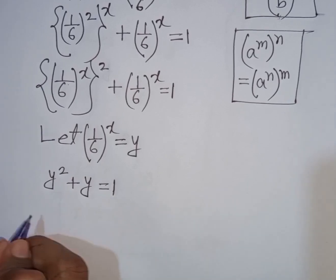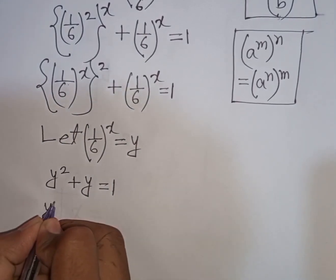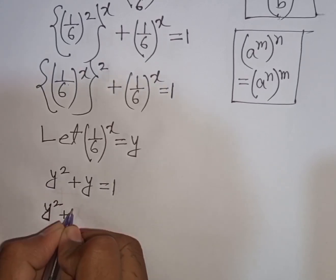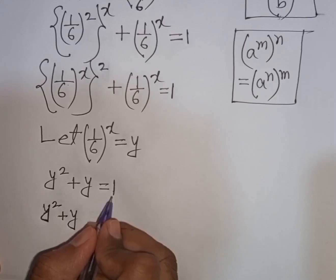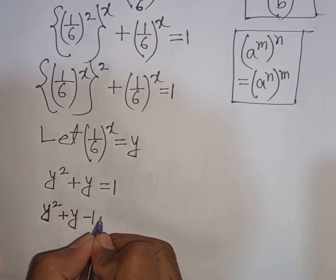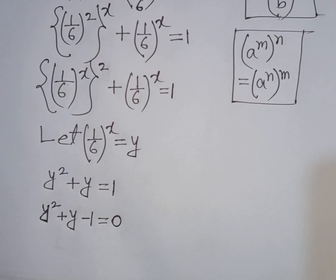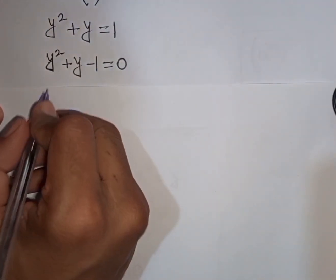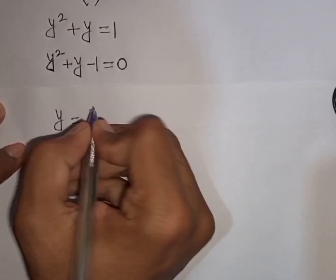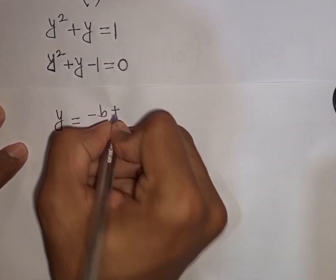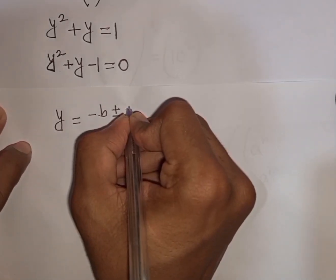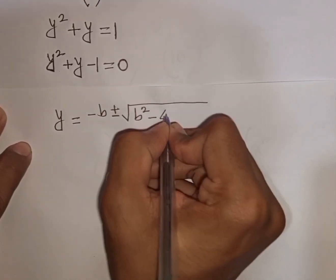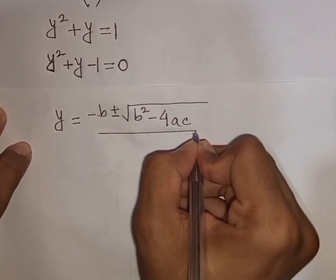Our equation will be y² + y = 1. We can rewrite this as y² + y - 1 = 0 by moving 1 to the left side.